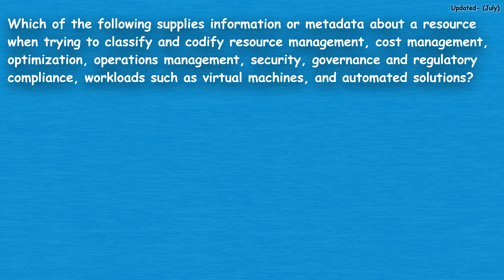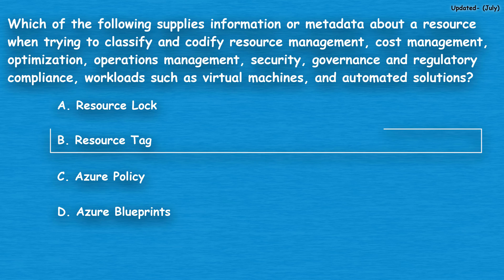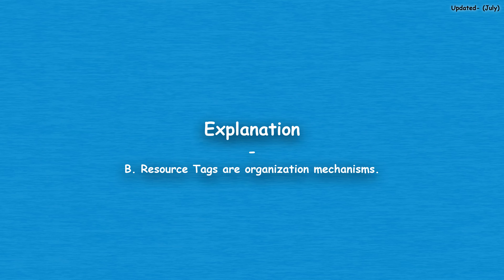Option A: Resource Lock. Option B: Resource Tag. Option C: Azure Policy. Option D: Azure Blueprints. The correct answer is option B, Resource Tag. Resource Tags are organization mechanisms.